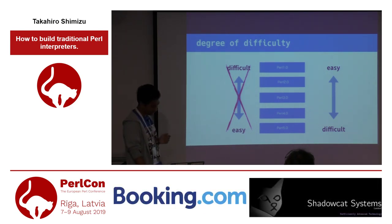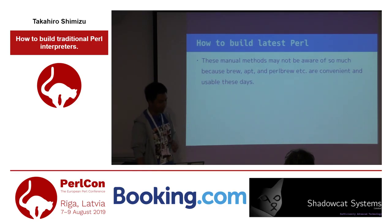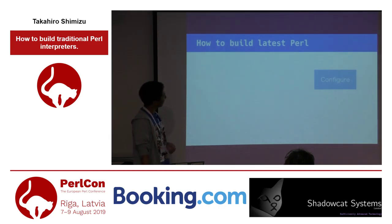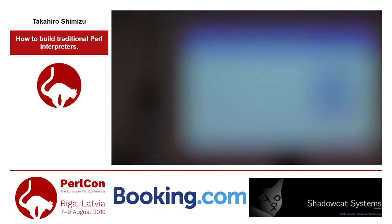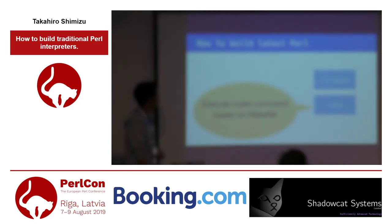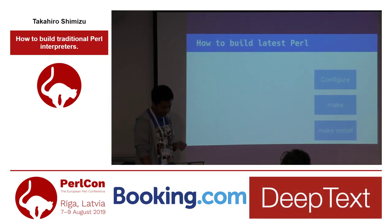This manual method may need quite a bit of work, because plenv, perlbrew, and Homebrew all use it. First, we execute configure — configure is a shell script that creates makefiles for each environment. Next, we execute make, which runs make commands based on makefiles. Finally, we execute make install, which puts the build result in the application directory.